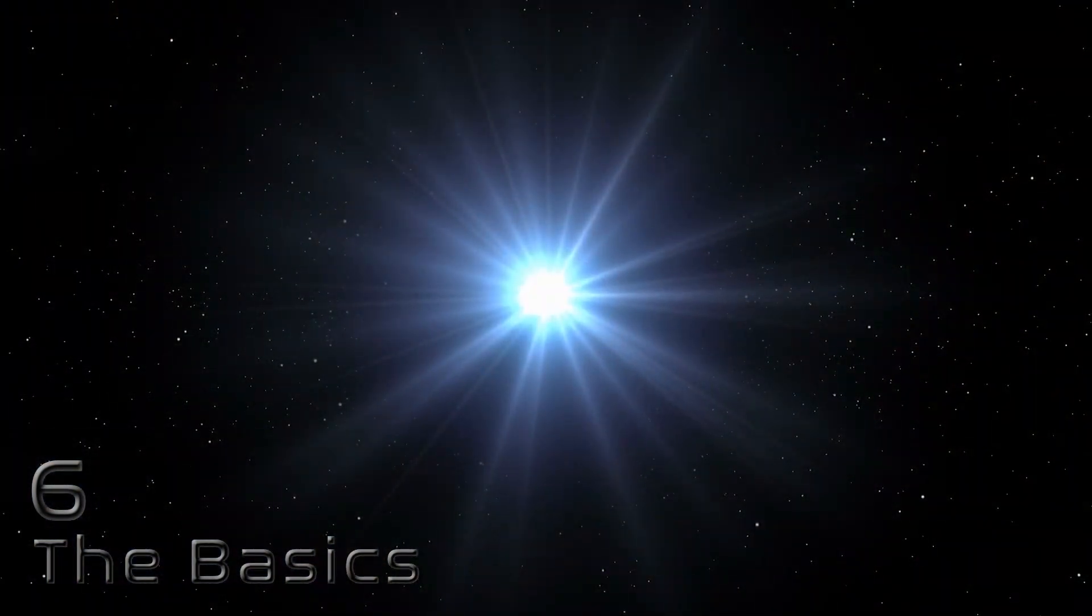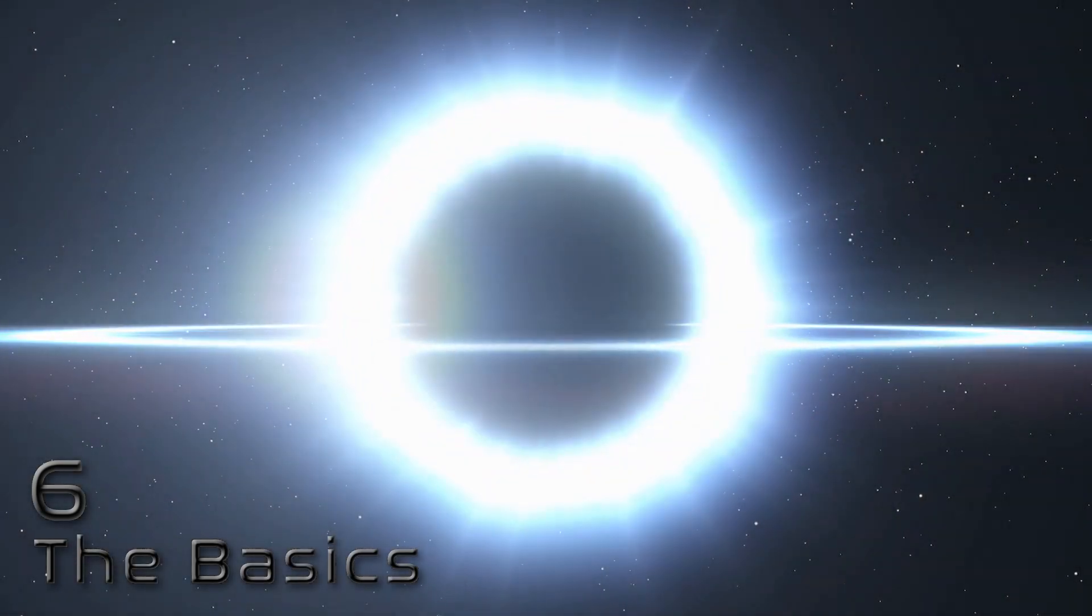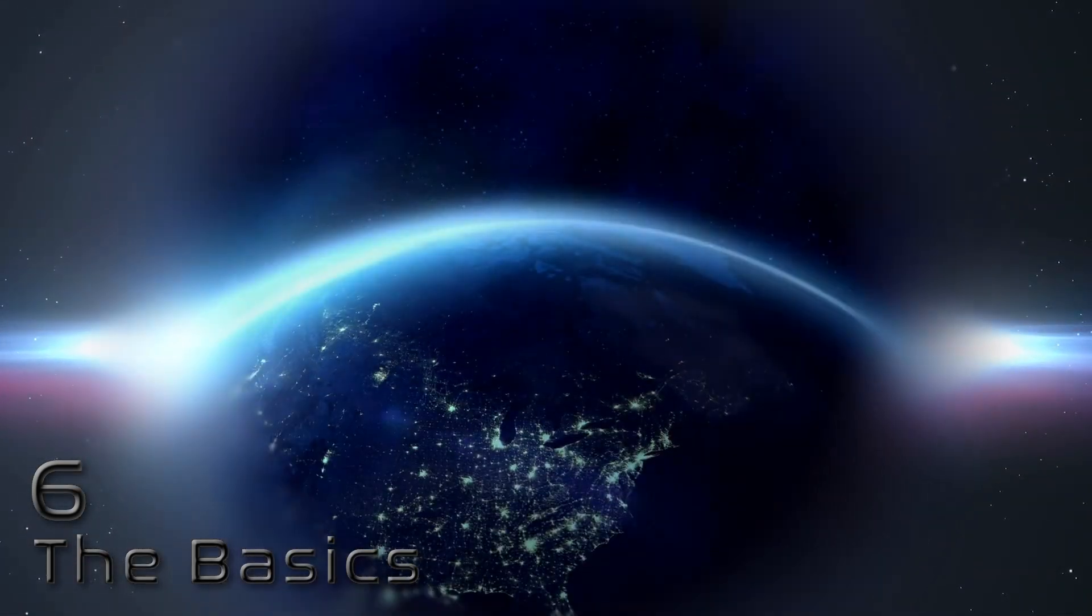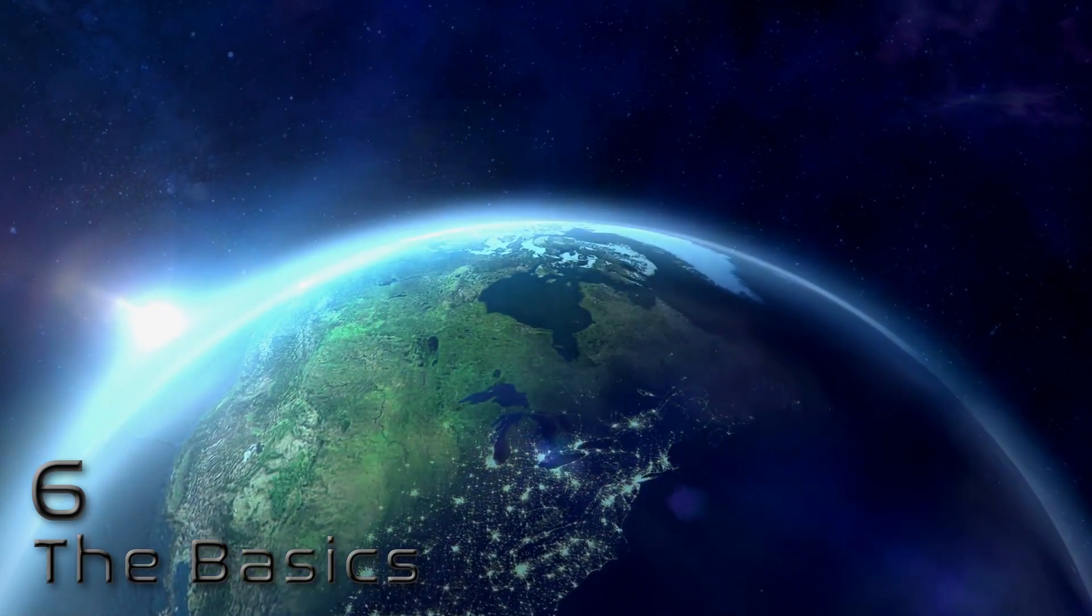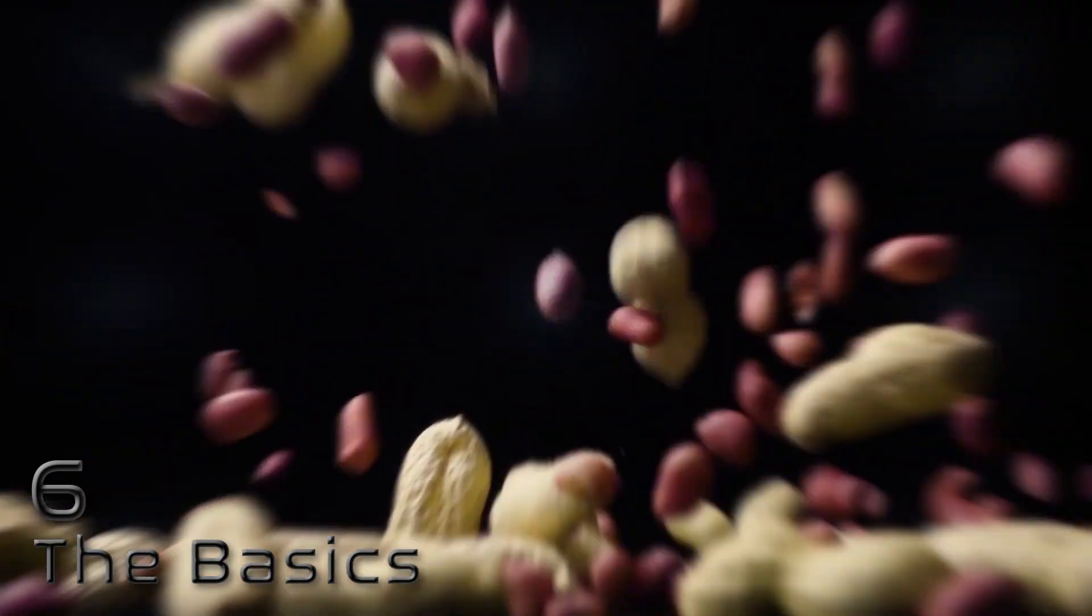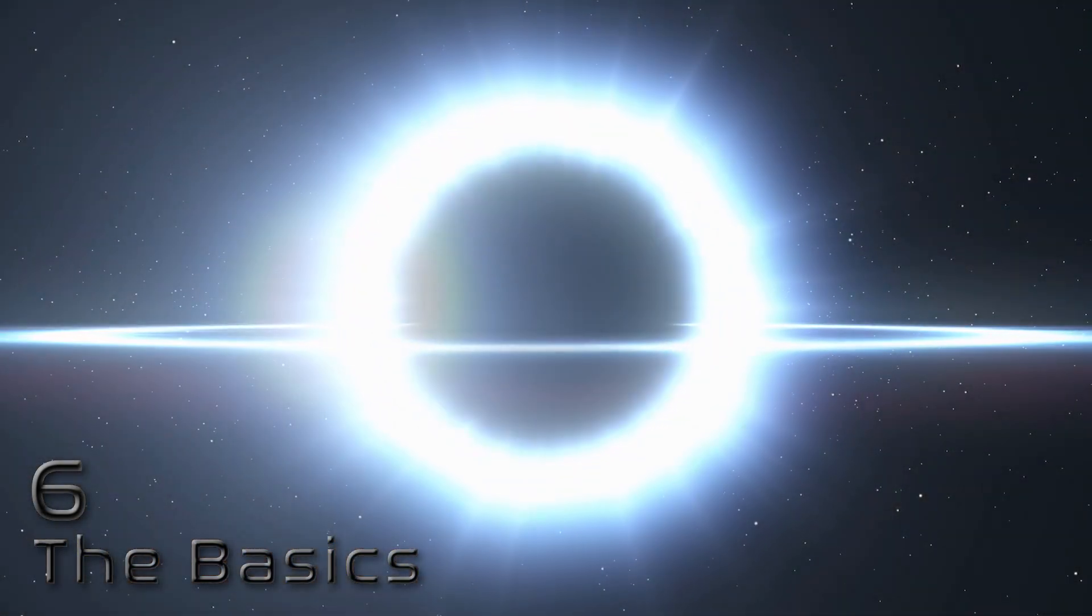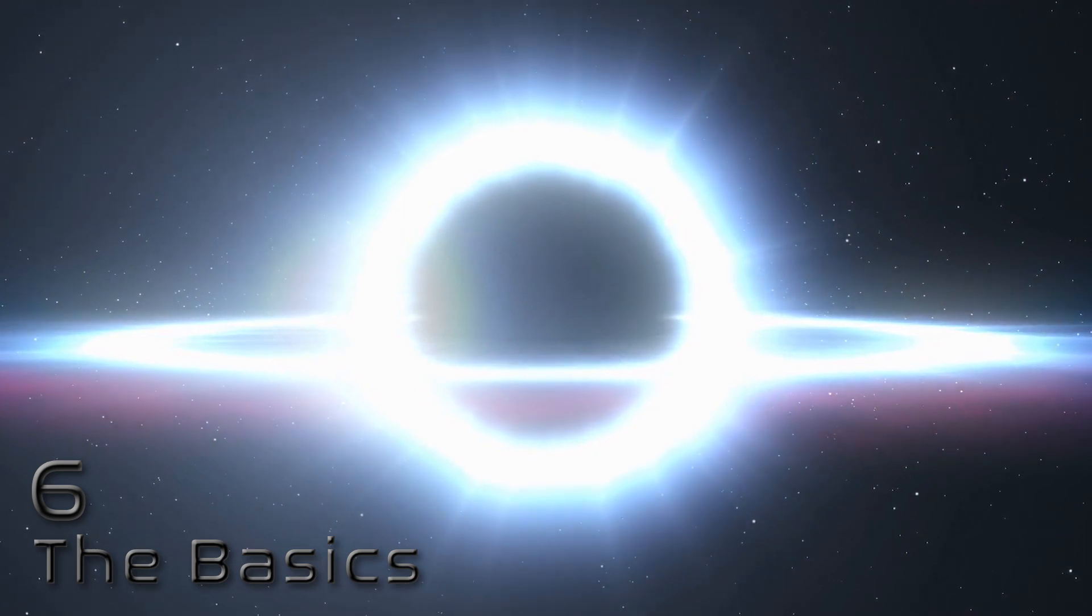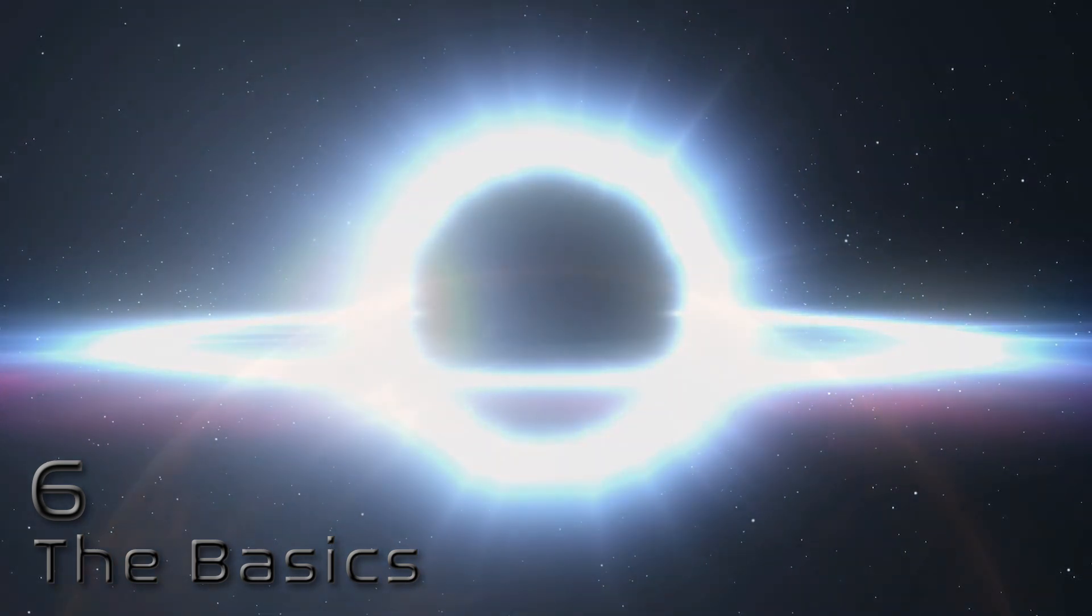Any object would take on the properties of a black hole if it was condensed to a certain size relating to its mass. For instance, if the Earth was the same weight it is now, but the size of a peanut, it would be so dense that it would become a black hole. No one has worked out how to do that yet, neither should they. Stars though, are experts at this.